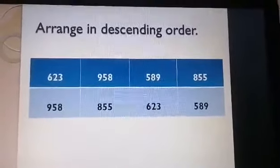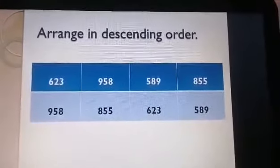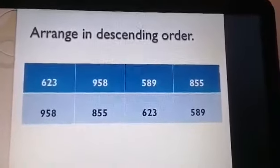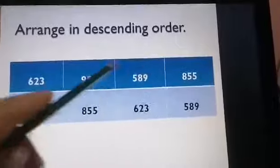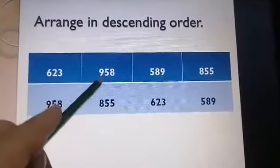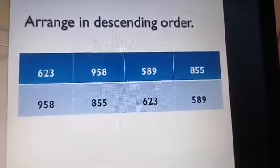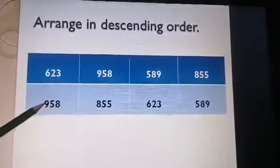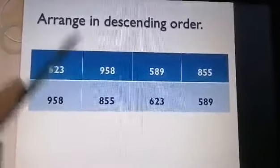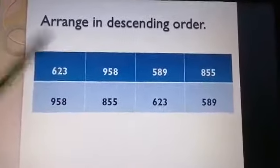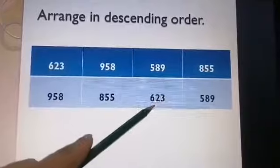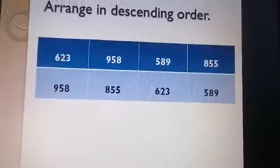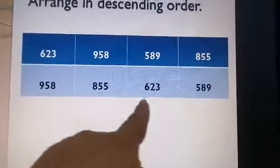Number 2: arrange in descending order — from the largest number to the smallest number. We have the same numbers. Again the hundreds digits are 6, 9, 5, 8. Which number is the biggest? Excellent — it is 9. So 958 is first. Then 855, then 623, then 589. So these numbers are in descending order from the biggest number to the smallest.